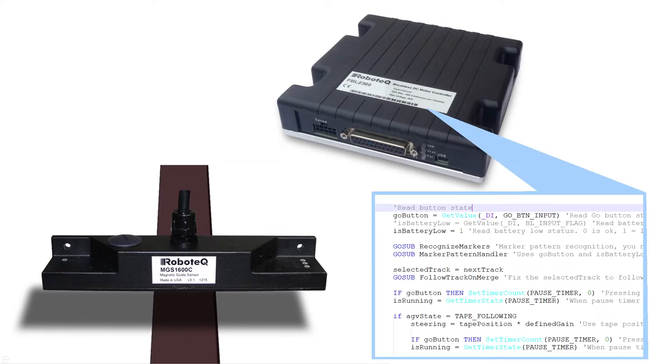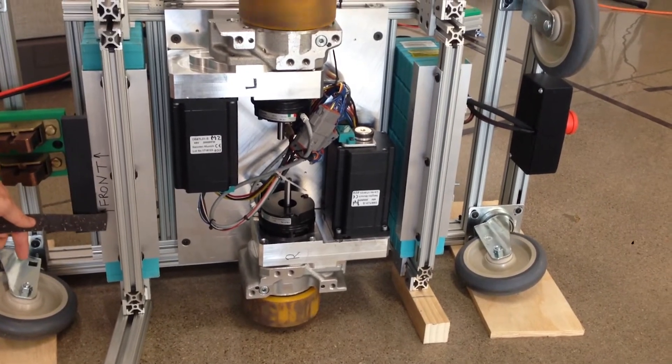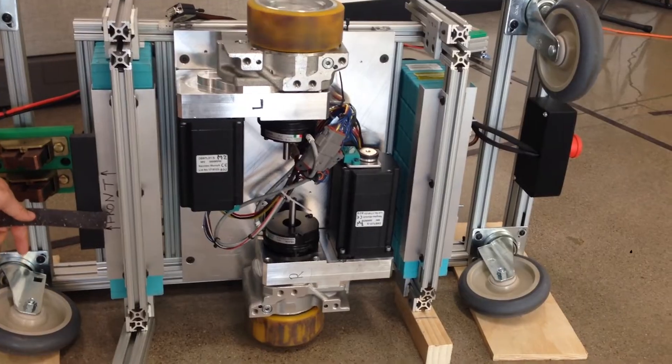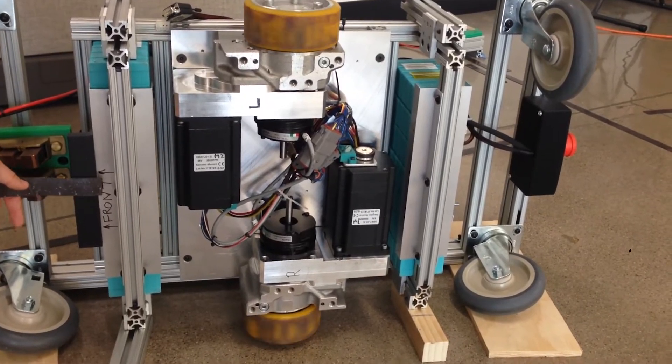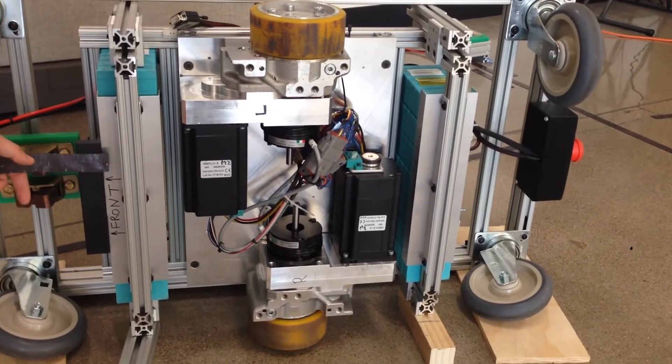The controller has a built-in programming language that is used to implement the tape-following algorithm. When a track is detected, the motors turn on. Moving the tape away from the center makes the AGV change direction to keep the robot centered on the track.